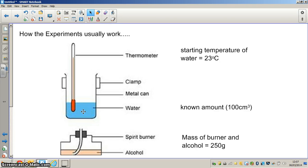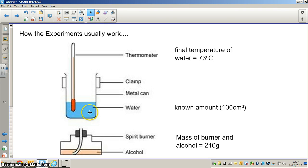Once we have done that, the water temperature has gone up. In this case, imagine I have stopped the experiment when the water temperature has reached 73 degrees. The volume of water hasn't changed because it has not gone past its boiling point so it hasn't evaporated, and I now re-measure the mass of the spirit burner and alcohol and this time it is 210 grams.